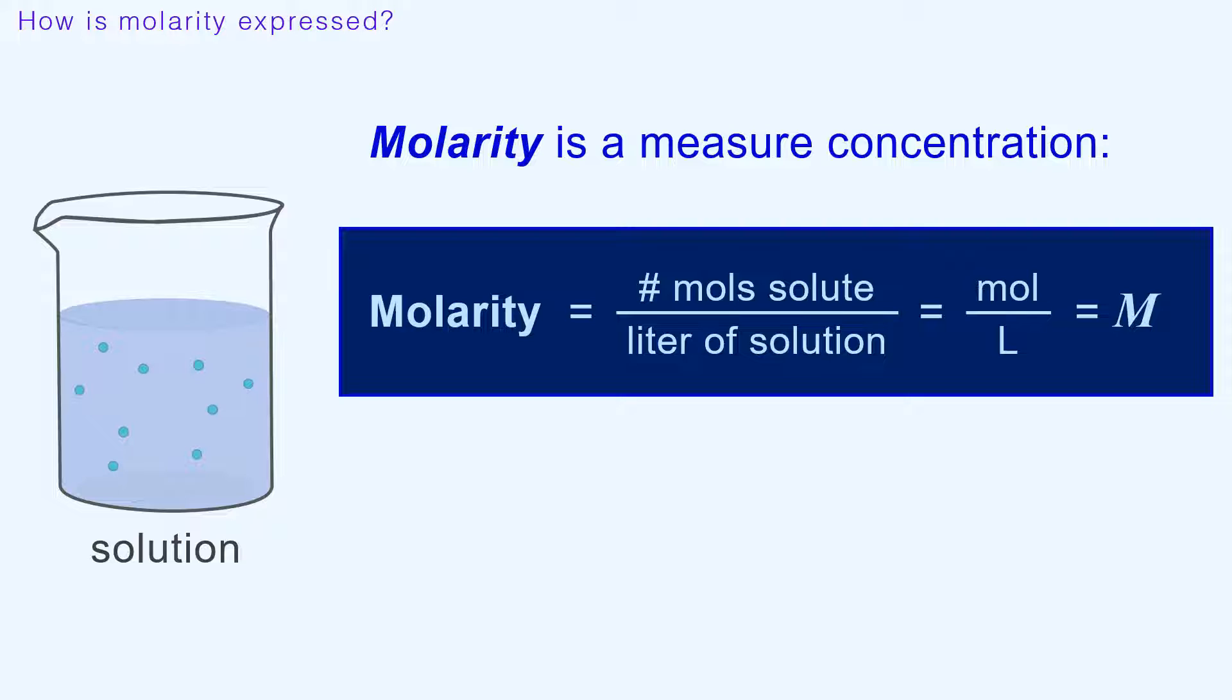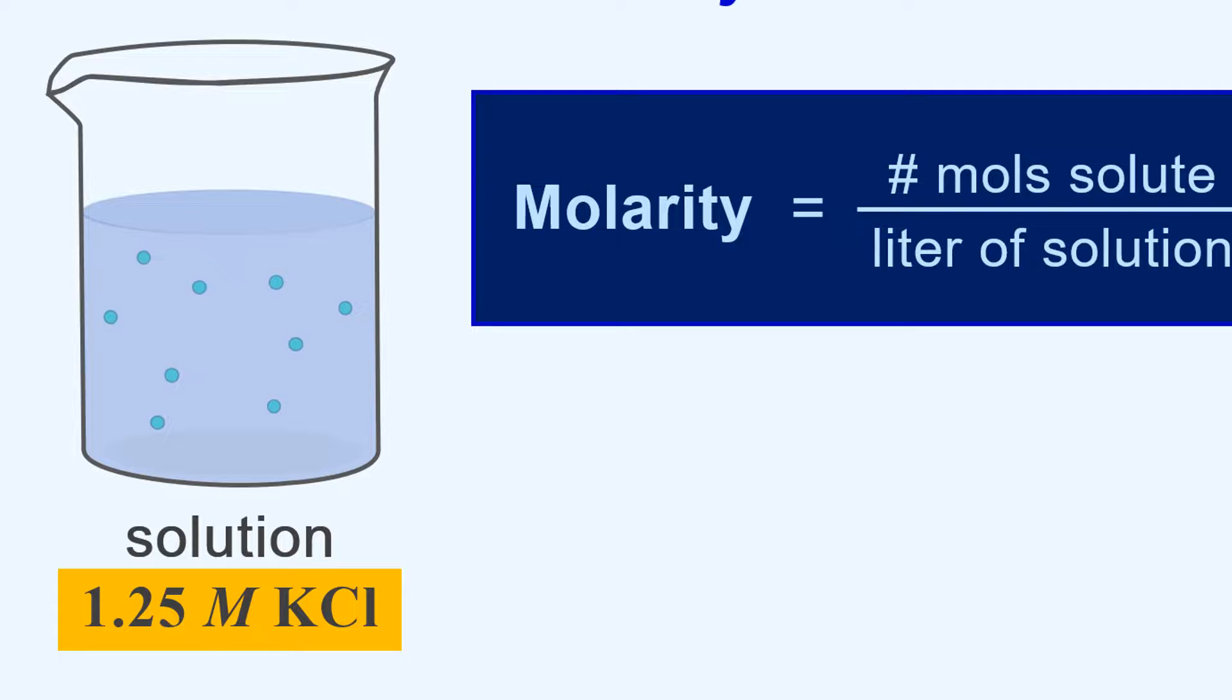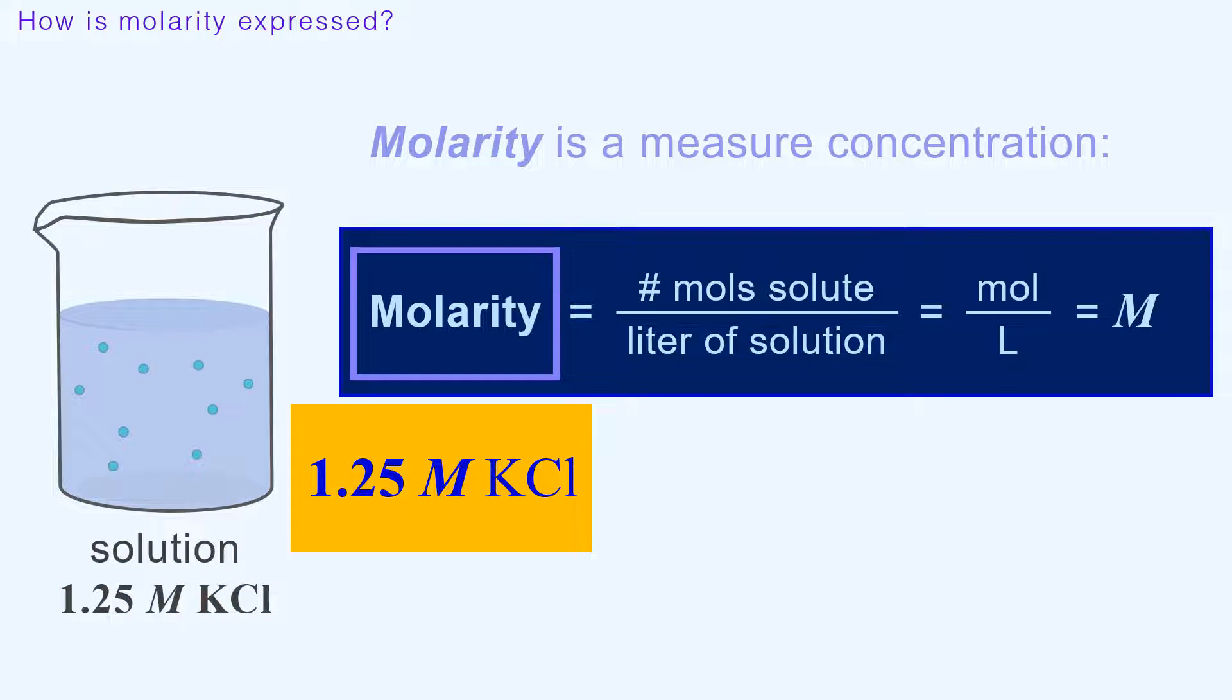sometimes italicized, which is pronounced molar. Let's say we have a 1.25 molar solution of KCl potassium chloride. So 1.25 is our molarity.